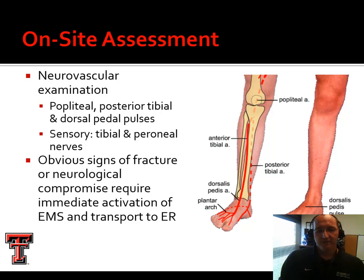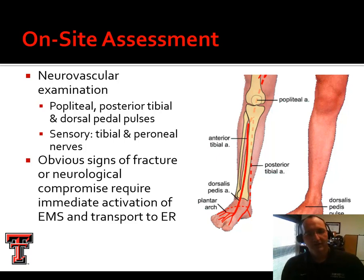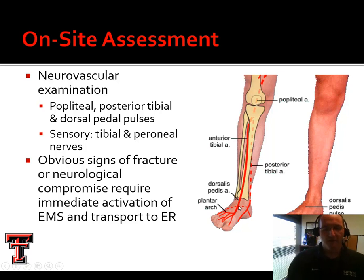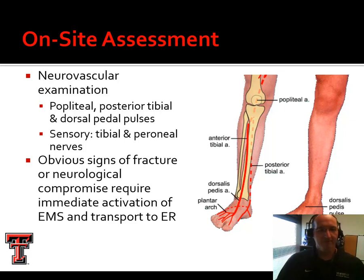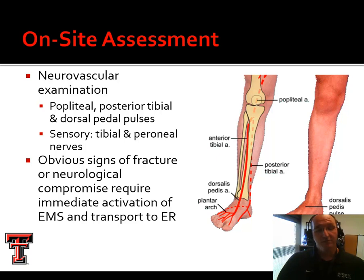Our neurovascular exam consists of looking at pulses, sensations, and motor function. In the case of the knee, we look at distal lower extremity pulses: the popliteal behind the knee, the posterior tibial along the medial aspect of the shin, and the dorsalis pedis. The best way to palpate dorsalis pedis is to stick your thumb in that arch and allow your fingertips to wrap over the foot. Obvious signs of fracture or nerve injury are a load-and-go — we don't attempt to manage that ourselves. We may splint or immobilize, but only in preparation for transport.